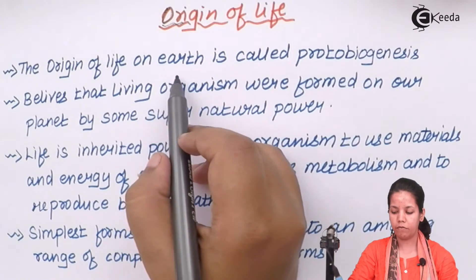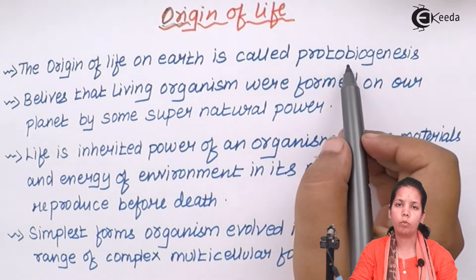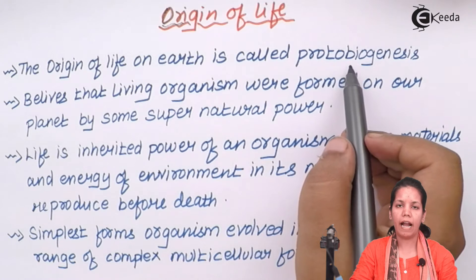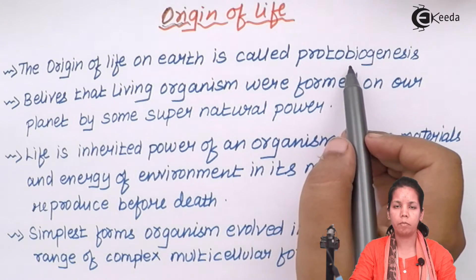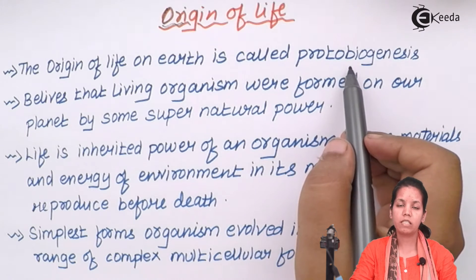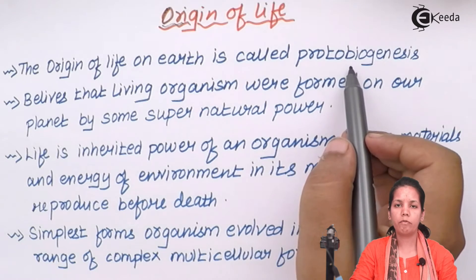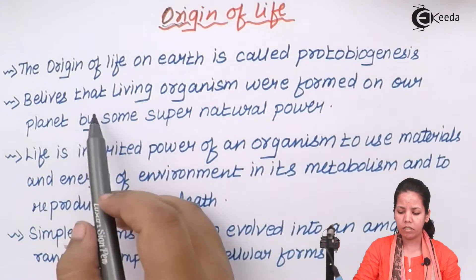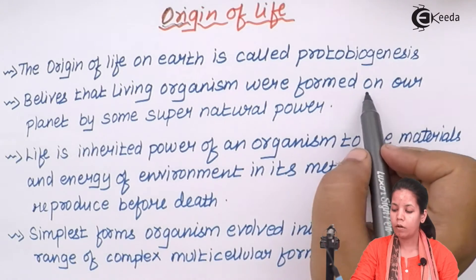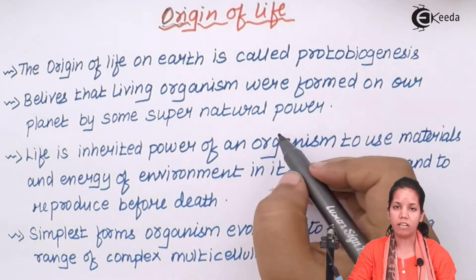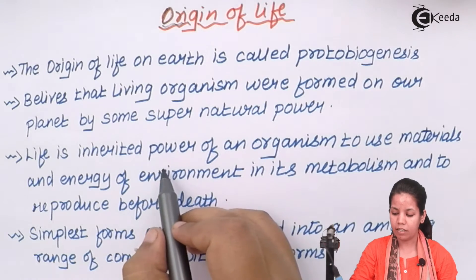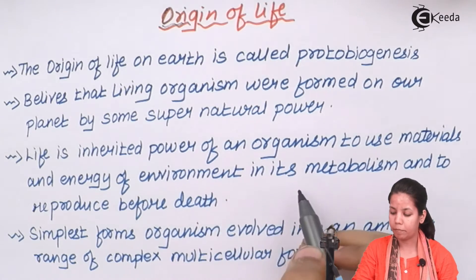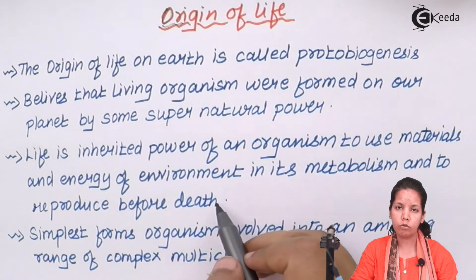Now, origin of life on earth is predominantly said to be protobiogenesis. Sometimes it's assumed that earth had life, or life on earth originated from a small simple particle. Sometimes theory says that it was the collision of particles that led to evolution of life on earth. Now, it's always believed that living organisms were formed on a planet by some supernatural paths. Life that's inherited to an organism to use materials and energy from the environment in its metabolism to reproduce before death.